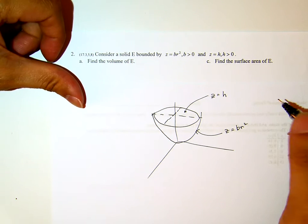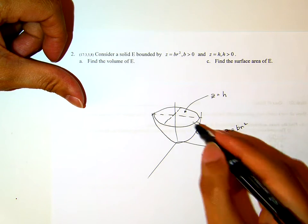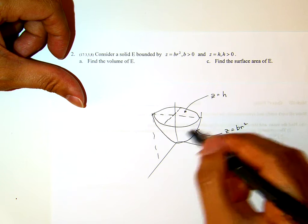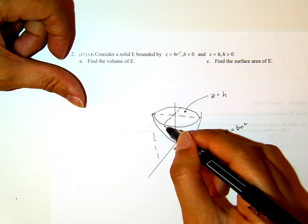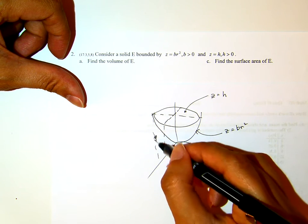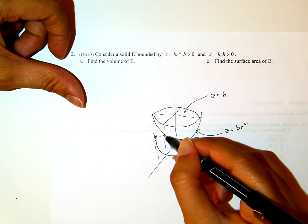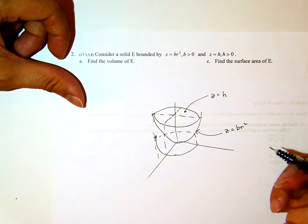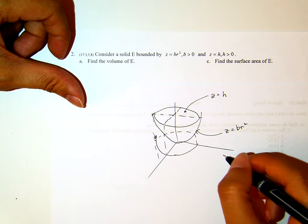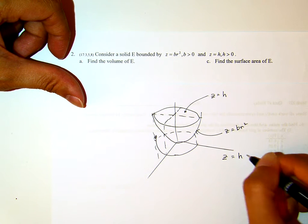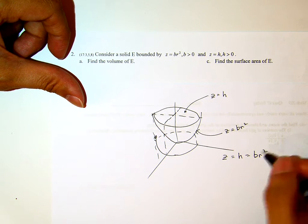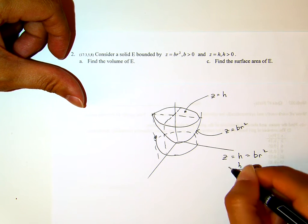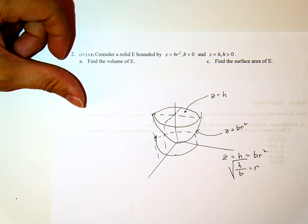Now, one of the things we are interested in, if you project this to the ground, what is the radius of this circle here? We can do it by z equals H equals Br squared. H over B equals r squared. So r equals the square root of H over B.